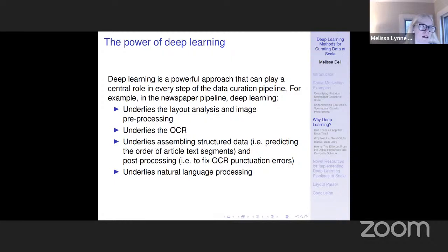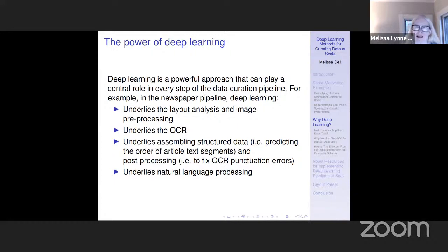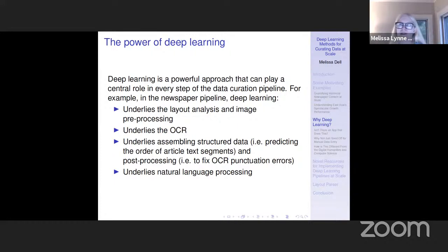Deep learning can play a role in pretty much every step of the data curation pipeline. Taking the newspaper example, it underlies the layout analysis and image pre-processing. Deep learning is what allows you to do OCR. It allows you to assemble structured data, like predicting the reading order. You can use it for post-processing — for example, deep methods to fix OCR errors. And it underlies the natural language processing. So kind of throughout the steps needed to take raw information and convert it into structured data, deep learning is really, really powerful.